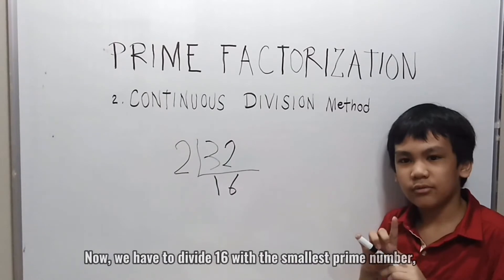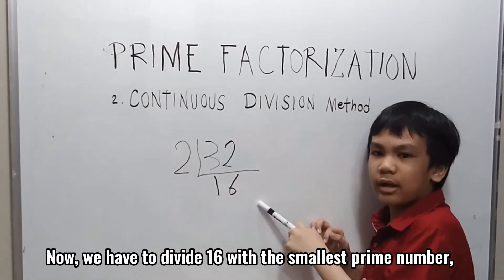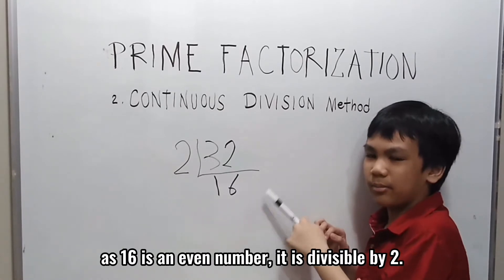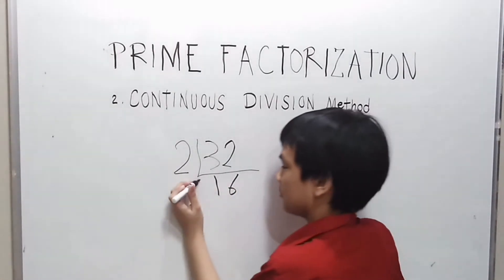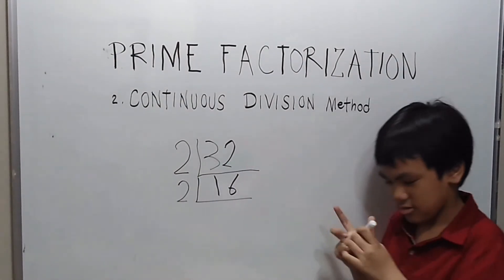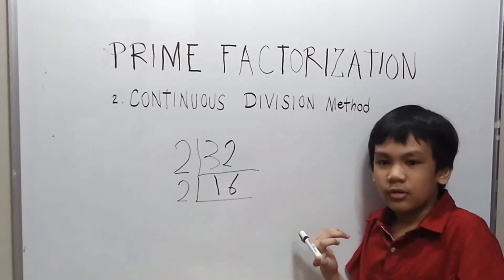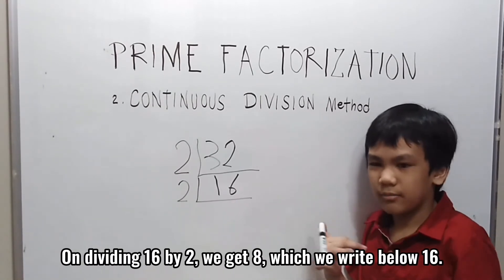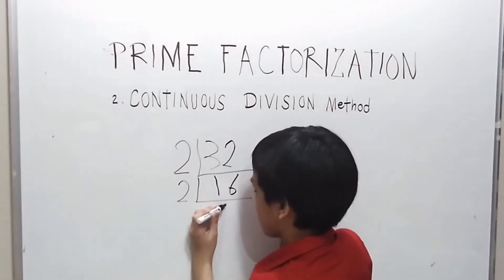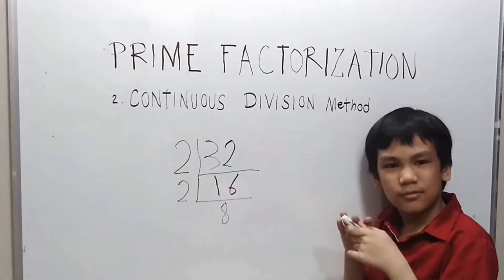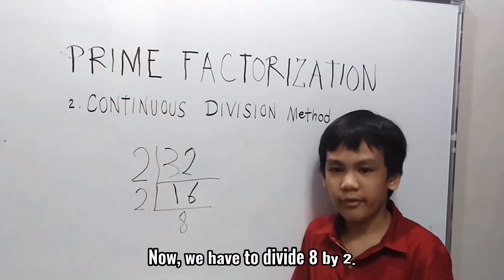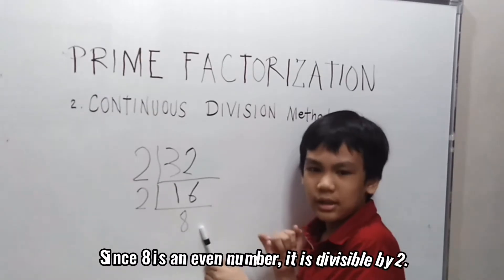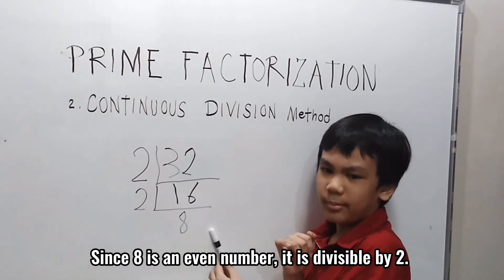Now we have to divide 16. With the smallest prime number — 16 is an even number, so it is divisible by 2. On dividing 16 by 2 we get 8, which we write below 16. Now we have to divide 8 by 2, and 8 is an even number, so it is divisible by 2.